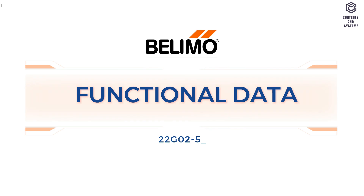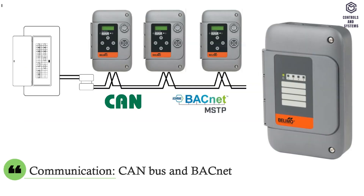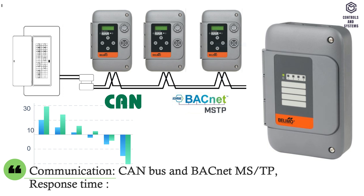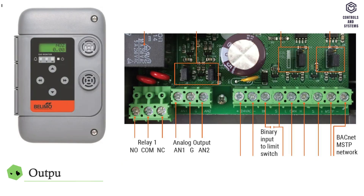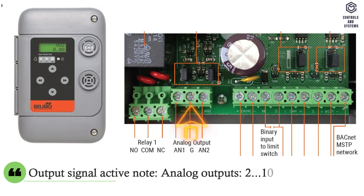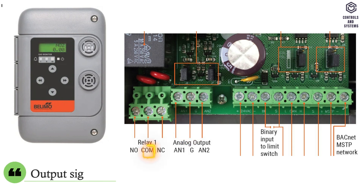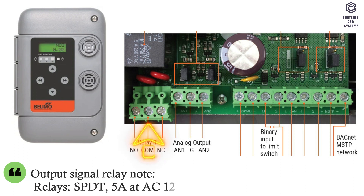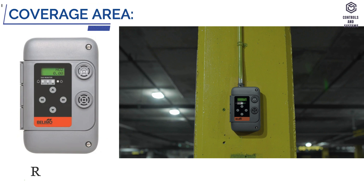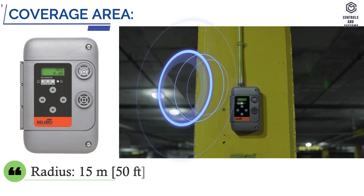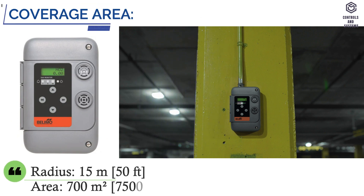Functional data. Communication is CAN bus and BACnet MS/TP. Response time is less than 30 seconds. Output signal analog outputs are 2 to 10 volt or 4 to 20 milliamps, user selectable with jumper. Output signal relays are SPDT, 5A at AC 125 volt, non-inductive. Coverage area radius is 15 meters; area is 700 meters square.